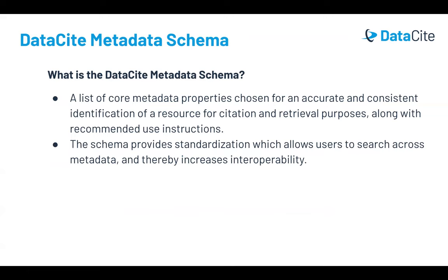The Datasite Metadata Schema is specifically designed for Datasite DOIs. It consists of a list of core metadata properties, chosen for accurate and consistent identification of a resource for citation and retrieval purposes. Each property is documented with recommended use instructions. The schema provides standardization for Datasite DOI metadata, enabling users to search across Datasite DOIs and thereby increasing interoperability.